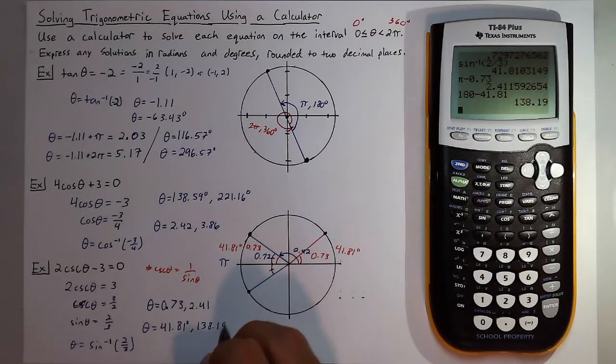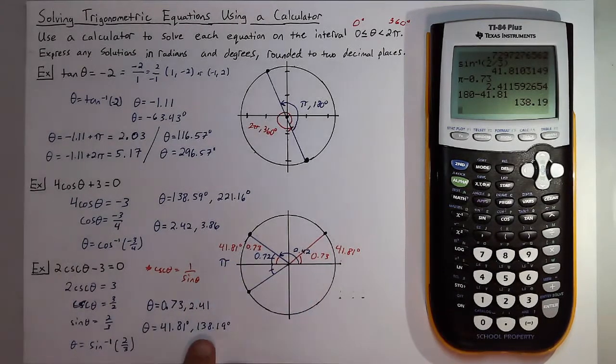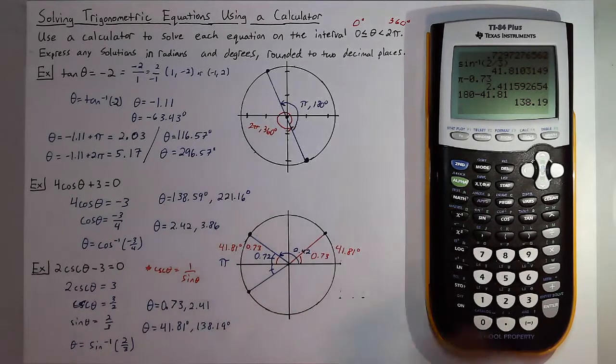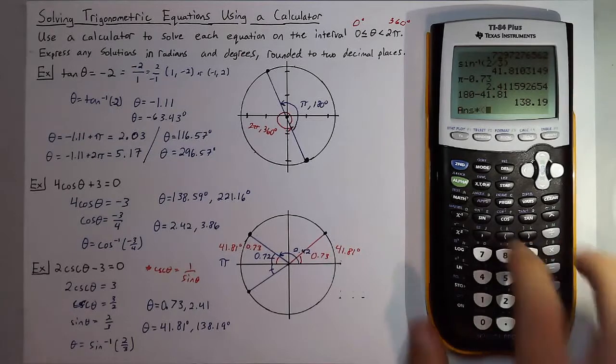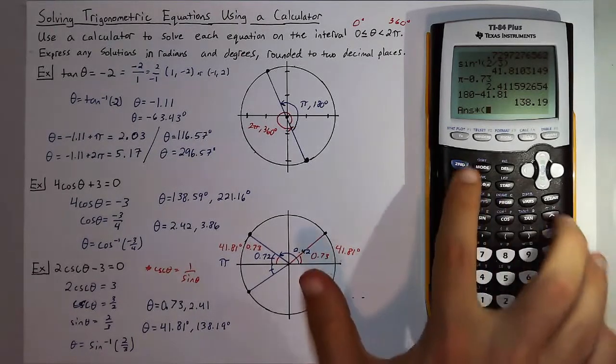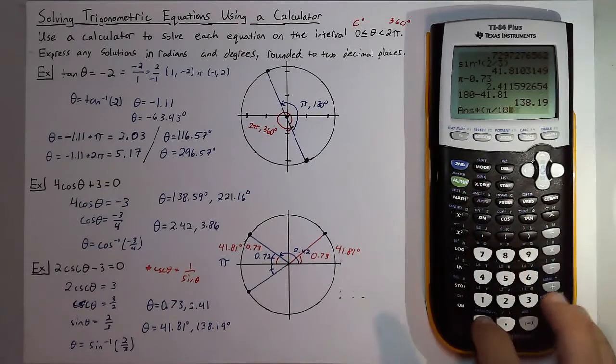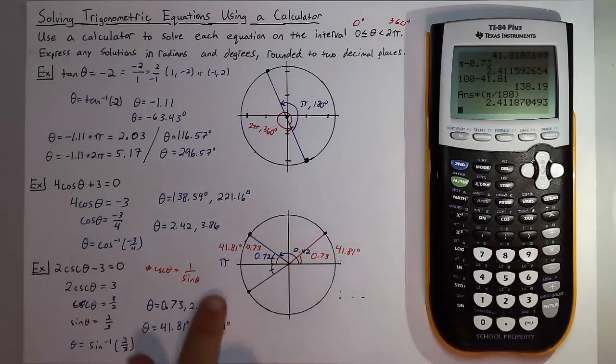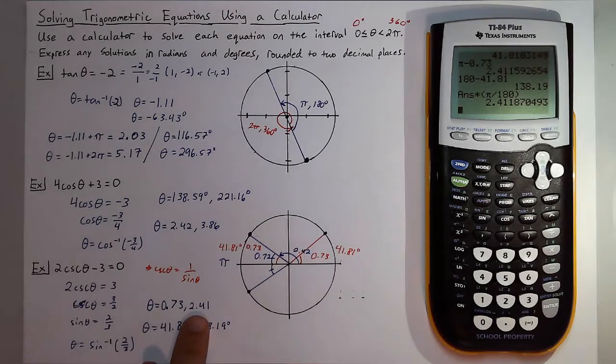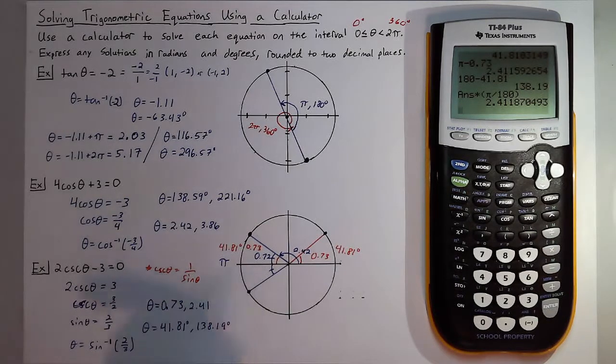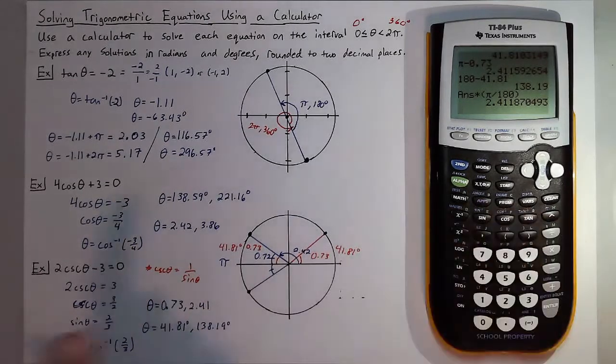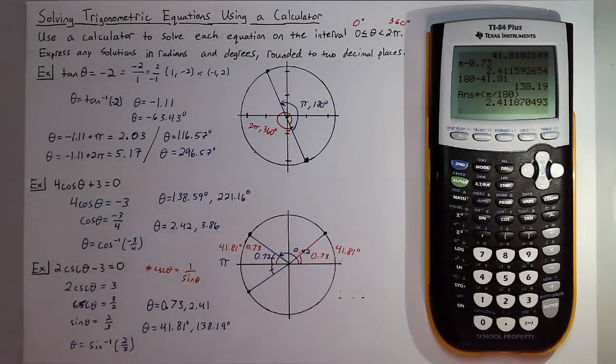If I wanted to, if I had the degrees answer first I could have also just converted that by multiplying by pi over 180, which would give me that 2.41 for my radian measure. So many ways to get about that answer. Once you have one you can find the others just by converting, and that is how you solve trigonometric equations using a calculator.